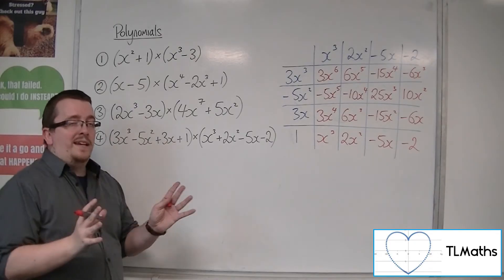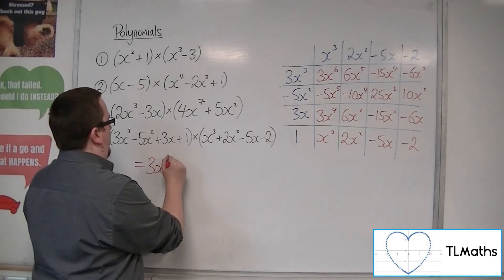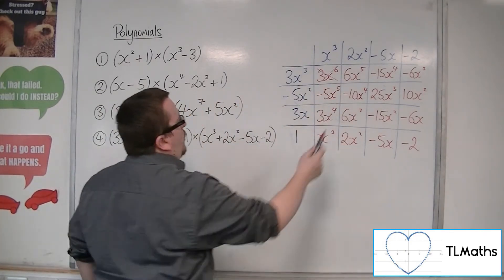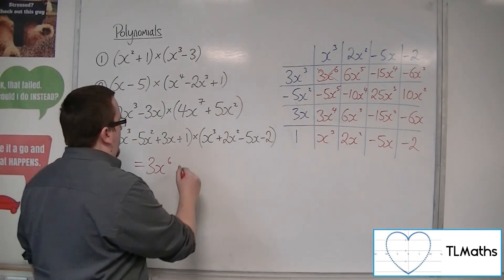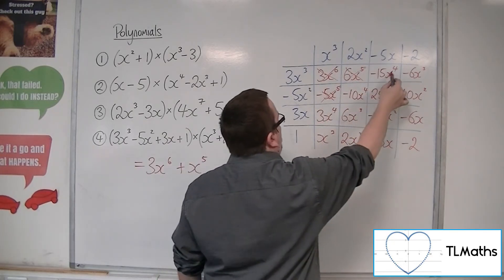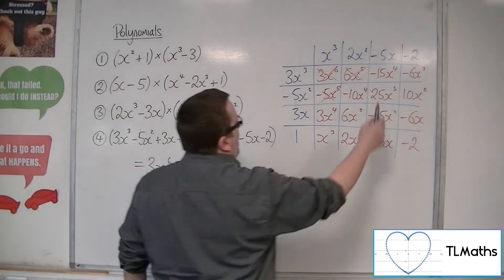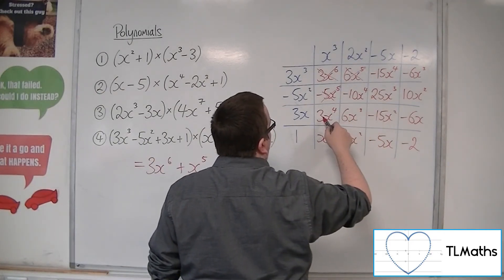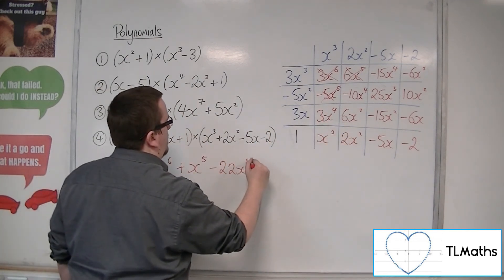Now we need to collect like terms. We've got the 3x to the 6. We've got 6x to the 5 and minus 5x to the 5, so that gives 1x to the 5. Then for the x to the 4 terms along this diagonal: minus 15, minus 10, so minus 25, plus 3, gives minus 22. So minus 22x to the 4.